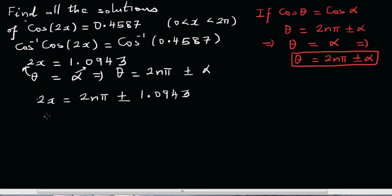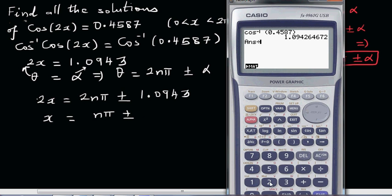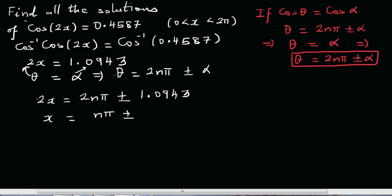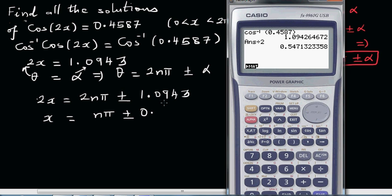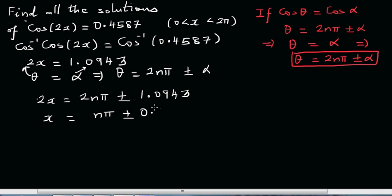I can divide the whole thing by 2. So x equals, dividing by 2, this will become nπ plus or minus, dividing by 2. I should have done the rounding at this step. Rounding it to 4 decimal places, it will be 0.5471.